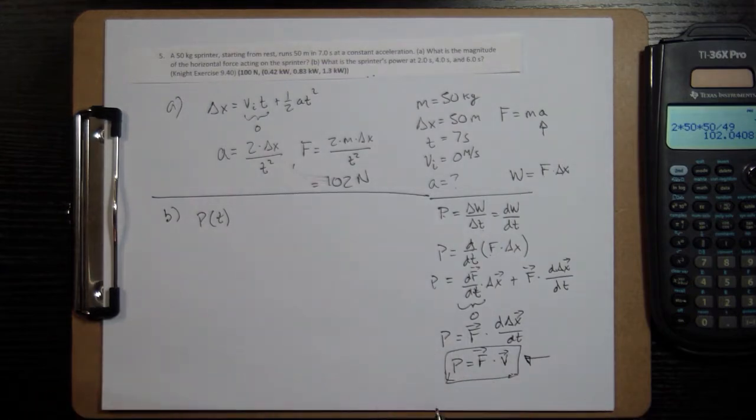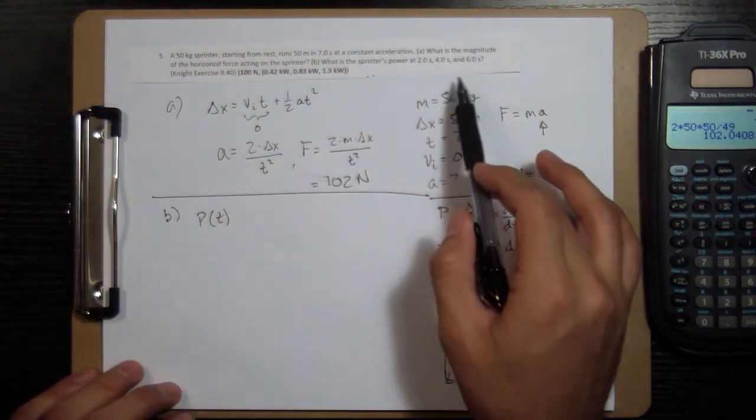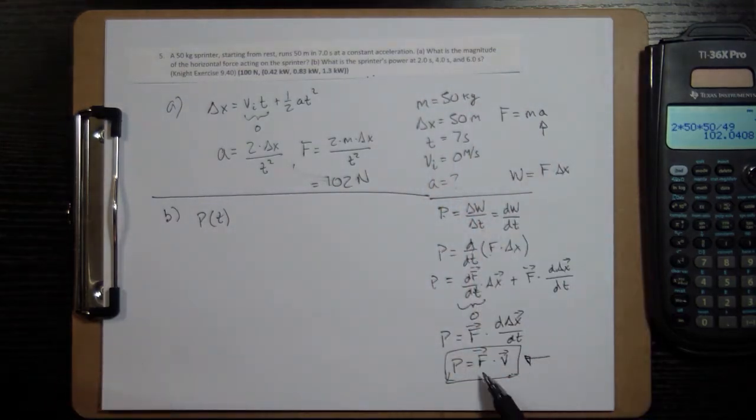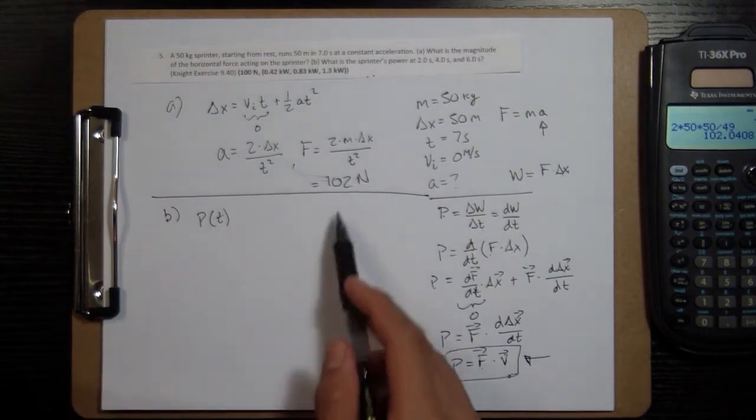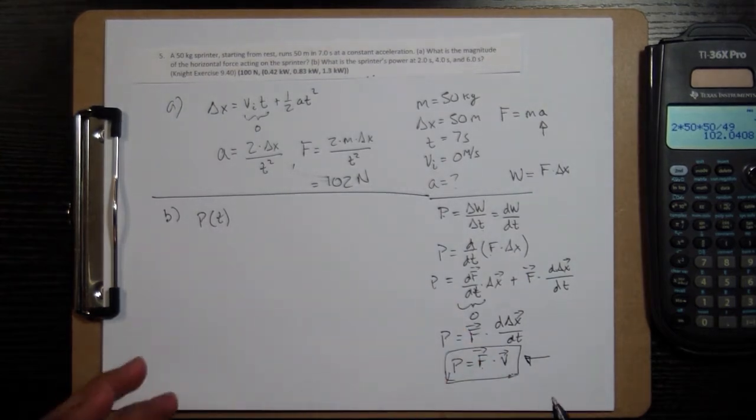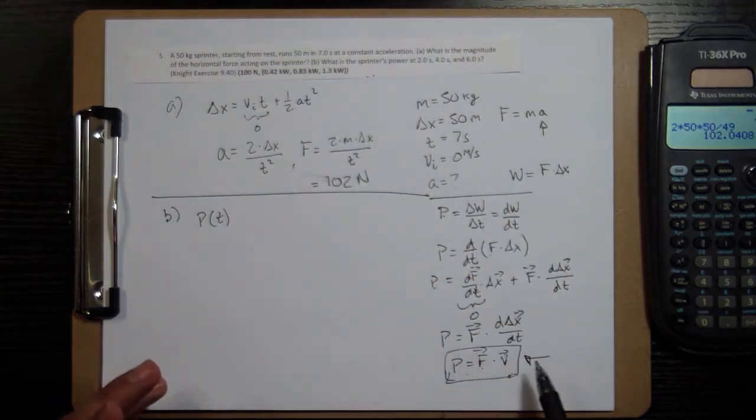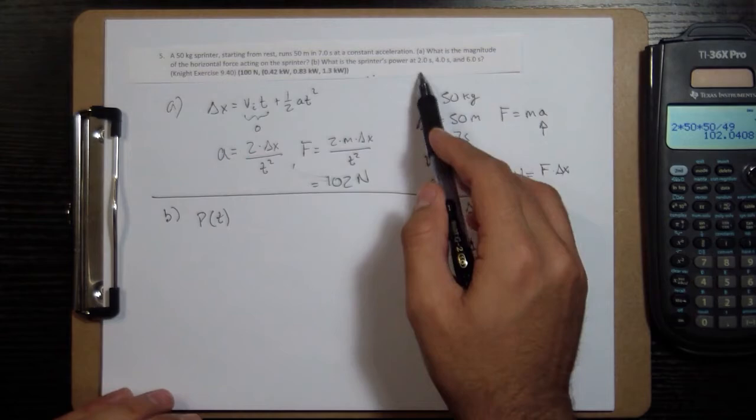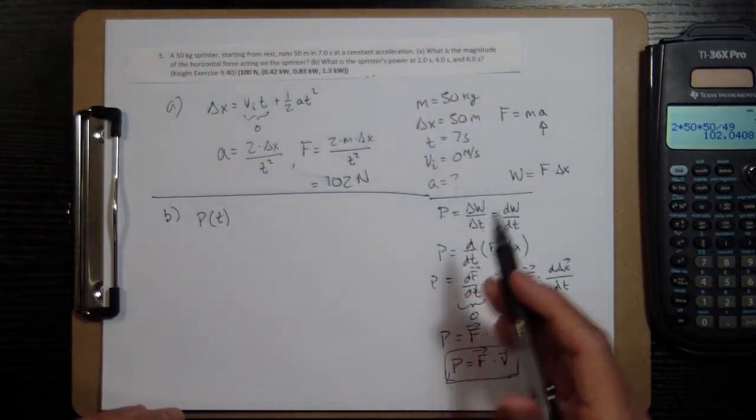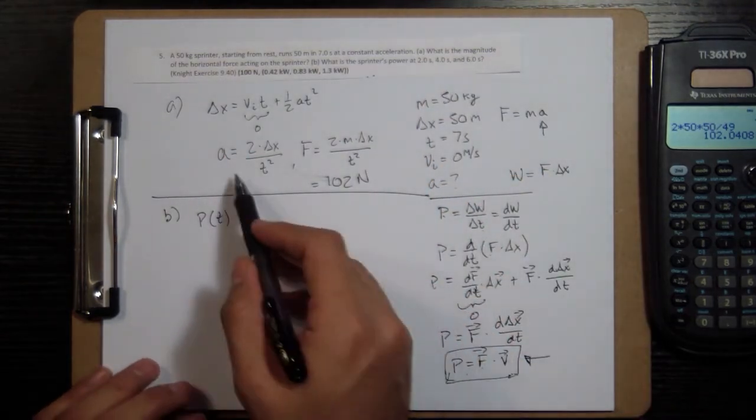So now that we have this, we're going to be able to use this because we will be able to figure out what our velocities are at 2, 4, and 6 seconds. And we know the force now is 100, 102. So what we need in order to get the power at these various times is an expression for velocity at the various times, 2 seconds, 4 seconds, 6 seconds. Well, we know the acceleration now.